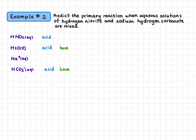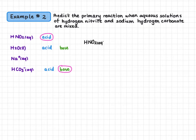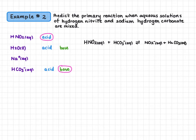Now we determine our strongest acid and strongest base. Our strongest acid is nitrous acid — it's closest to the top of the acid column. Our strongest base is hydrogen carbonate — it's closest to the bottom of the base column. So we react these two species. Nitrous acid donates a hydrogen to form its conjugate base, nitrite. Hydrogen carbonate accepts a proton to form its conjugate acid, carbonic acid. We have two conjugate acid-base pairs: nitrous acid and nitrite, and hydrogen carbonate and carbonic acid.